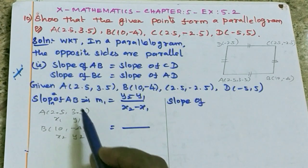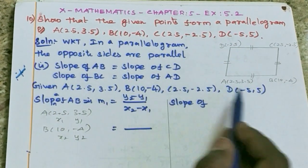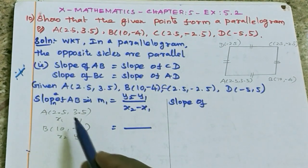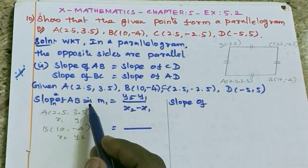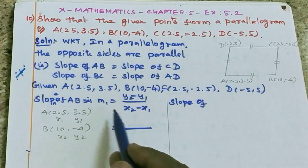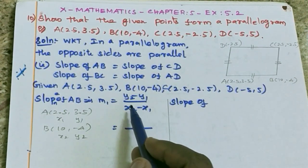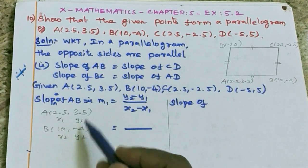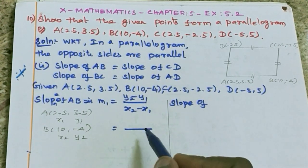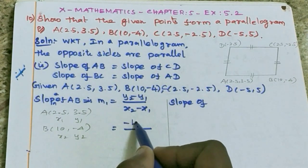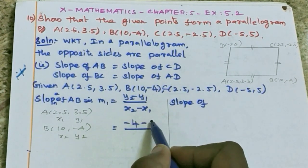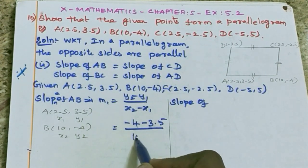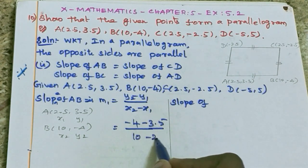So let's check. Given ABCD, the 3 points are set. First half: slope of AB, let's take it as M1. So what is the formula? y2 minus y1 by x2 minus x1. Now substitute the values. y2 is minus 4, y1 is 3.5, divided by x2 is 10, x1 is 2.5.